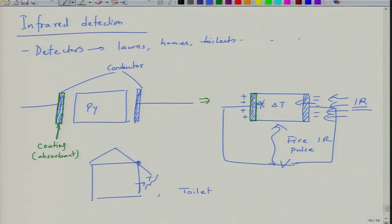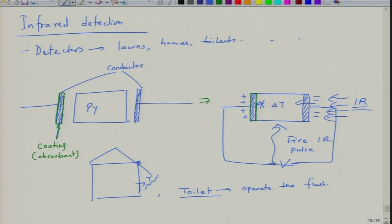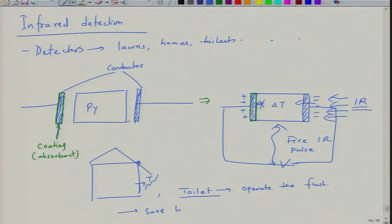Similarly, in toilets the IR detector can operate the flush. When a person stands in front of the toilet, IR is absorbed by the detector. When the person leaves, the temperature drops, the IR stops, and the feedback circuit detects the absence of IR and releases the water. So pyroelectric IR detectors can be used to save light and water — functioning as motion detectors in various applications.